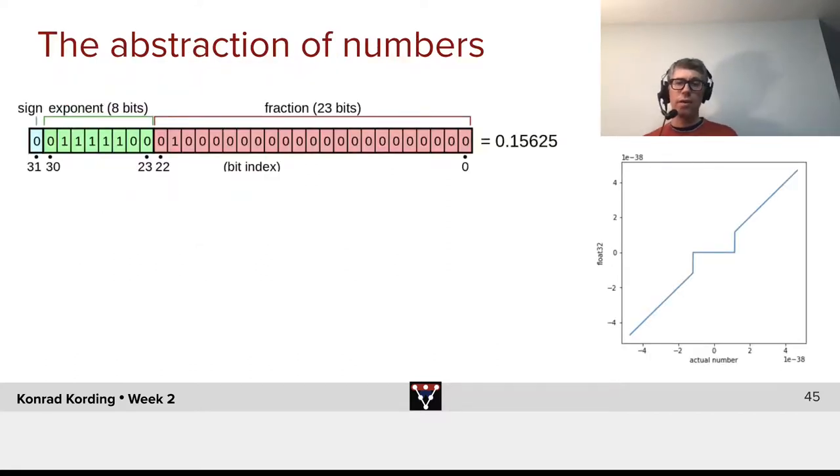Now, if we look at a typical number representation, here we have 32-bit floats. It has a sign. It's a bit that just binarily says, is this a positive or negative number? It has an exponent. And then it has the number itself.